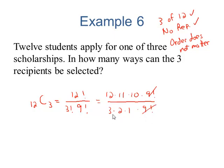Divide those out. Let's see, 3 times 2 is 6. That divides into 12 two times. Just multiply what's left, and you have 220 different ways.